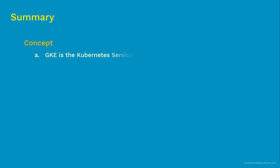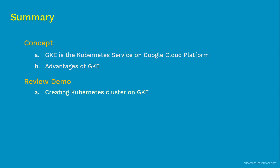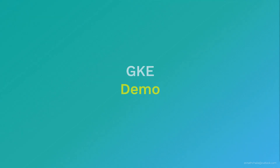Coming to a summary — in this video, we first discussed what GKE is and what it does. GKE is a Kubernetes service on Google Cloud Platform. Then we discussed the various advantages of GKE. After that, in the review demo section, we discussed how easy it is to create a Kubernetes cluster on GKE, and we did testing by deploying a sample application to make sure everything is working. Coming up next is the actual demo of GKE, where we will perform the exact steps discussed in the review demo section. Thank you so much for watching, and hope to see you in the next video.